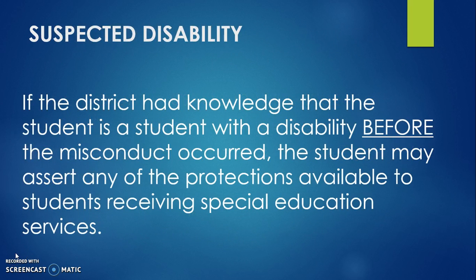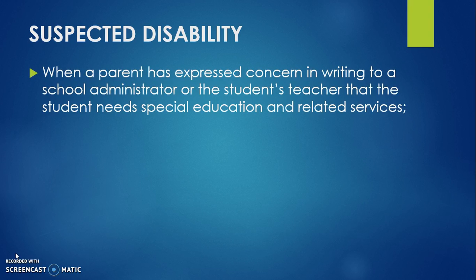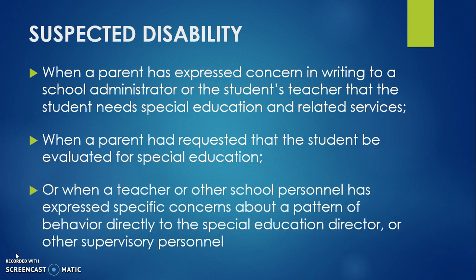If the district had knowledge that the student is a student with a disability before the misconduct occurred, the student may assert any of the protections available to students receiving special education services. A school district has knowledge that a student may have a disability when a parent has expressed concern in writing to a school administrator or the student's teacher that the student needs special education and related services, when a parent has requested that the student be evaluated for special education, or when a teacher or other school personnel has expressed specific concerns about a pattern of behavior directly to the special education director or other supervisory personnel.